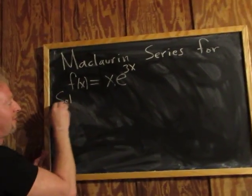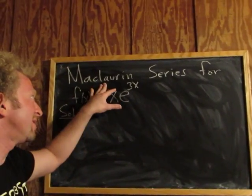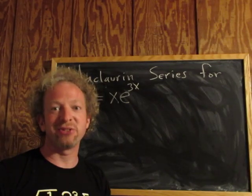So we'll start by writing the Maclaurin series for e to the x. By the way, the Maclaurin series is simply the Taylor series centered at c equals 0.